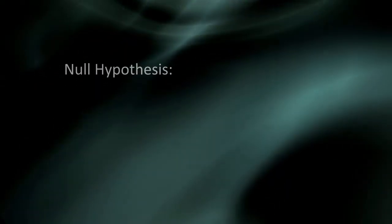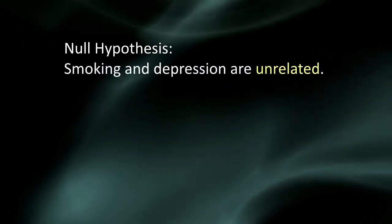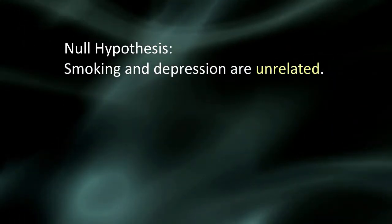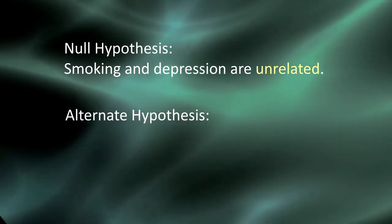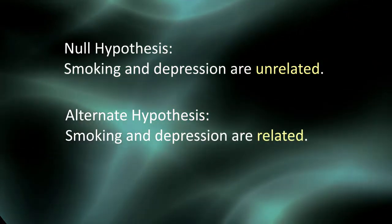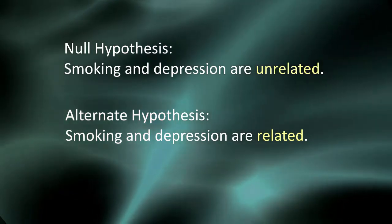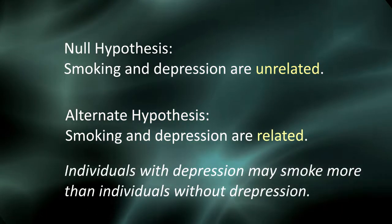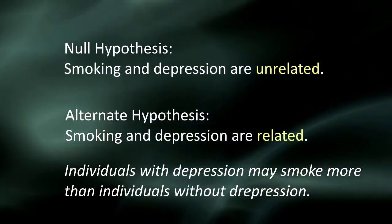The null hypothesis basically says nothing special is going on between depression and smoking — in other words, that they are unrelated to one another. The alternate hypothesis says that there is a relationship, and allows that the difference in smoking in those individuals with and without depression could be positive or negative. That is, individuals with depression may smoke more than individuals without depression, or they may smoke less.